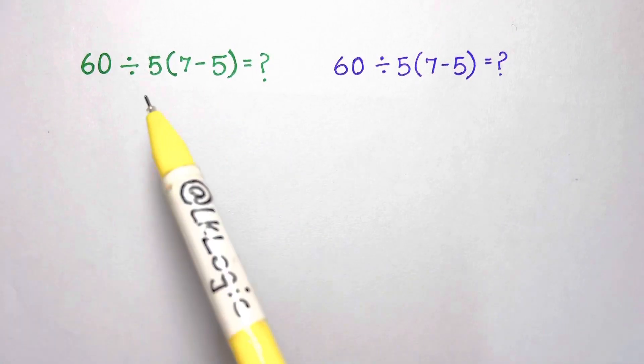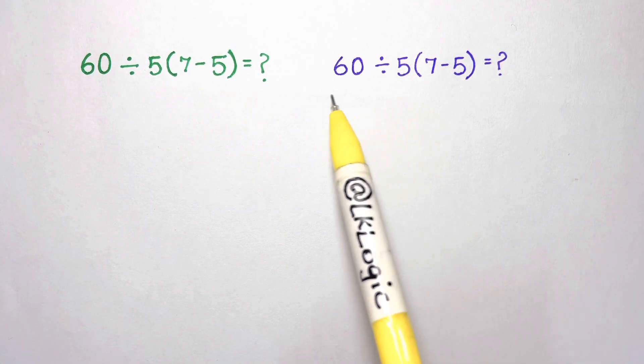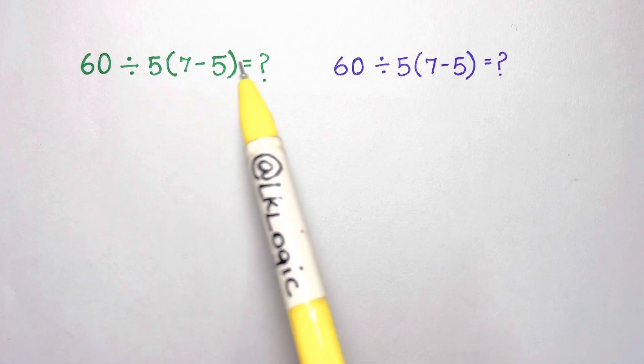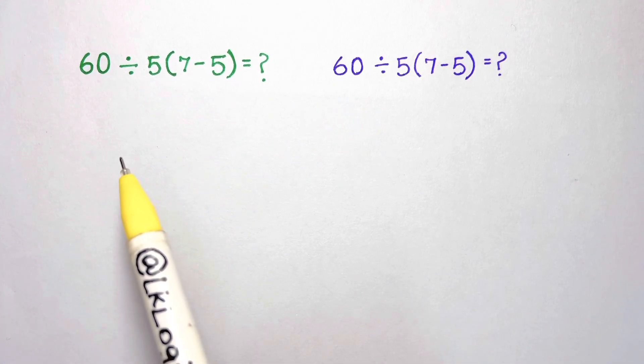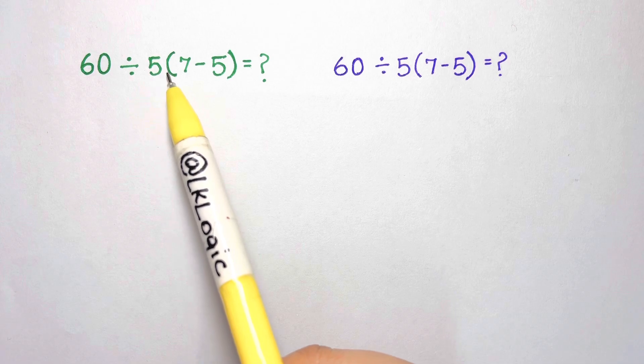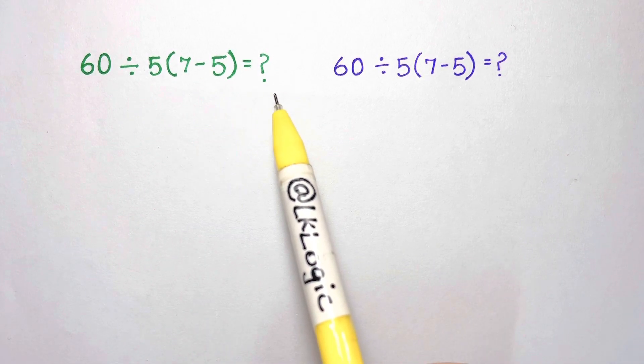Right now the internet is going crazy over this math problem, so it's time for the order of operations to save the day. The problem is 60 divided by 5 times 7 minus 5 equals what?